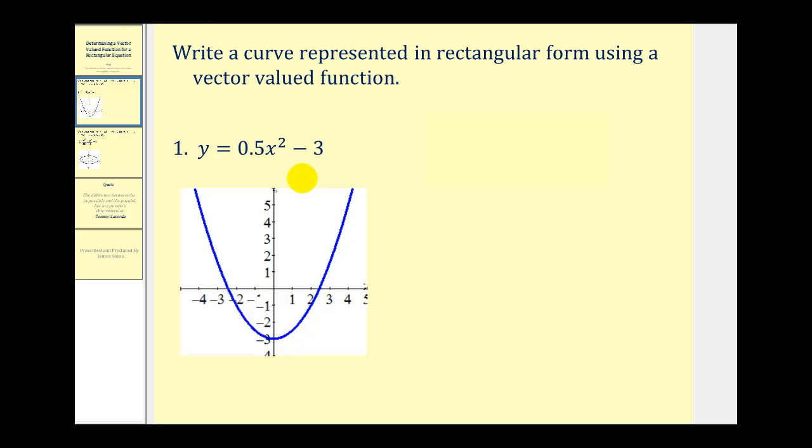The way we do this is to express this as a set of parametric equations and then set it up as a vector-valued function. For this equation, if we let x = t, we can perform substitution and replace x with t. So we can say that y = 0.5t² - 3.